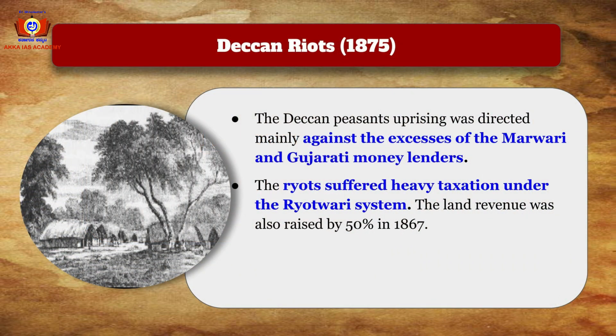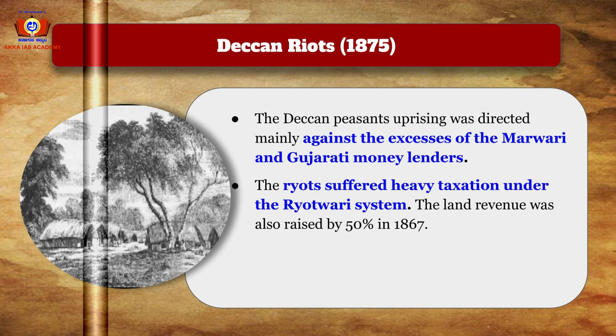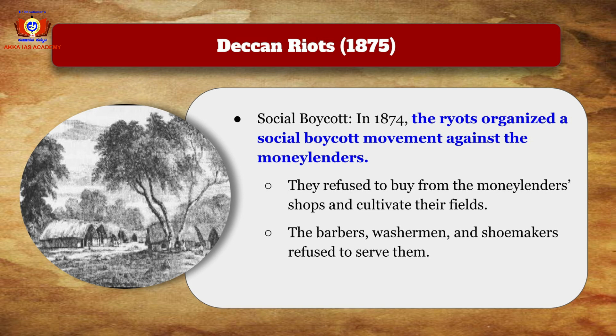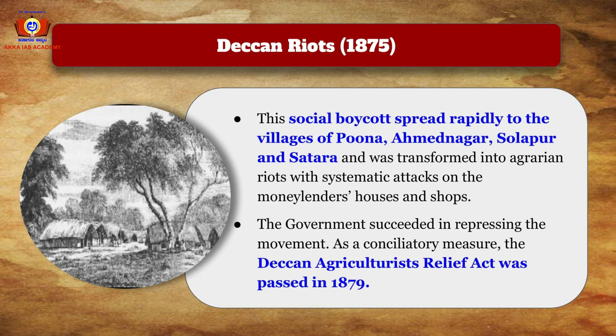The Deccan Riots of 1875 were directed against the excesses of Marwari and Gujarati moneylenders. The raots suffered heavy taxation under the raiyatwari system, and land revenue was raised by 50% in 1867. In 1874, the raots organized a social boycott movement against the moneylenders, refusing to buy from their shops or cultivate their fields. Barbers, washermen, and shoemakers also refused to serve them.